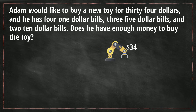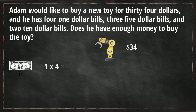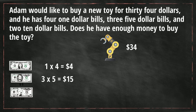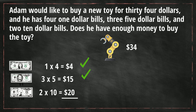Let's start with the one dollar bills — he has four of these. Next, he has three five dollar bills, and remember a five dollar bill represents five one dollar bills, so three times five is fifteen. Then he has two ten dollar bills, so two times ten equals twenty. In total he has four plus fifteen plus twenty, which equals thirty nine dollars. So Adam can buy this toy for thirty four dollars.